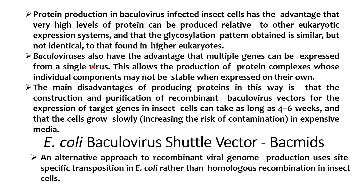Protein production in baculovirus-infected insect cells has advantages: very high levels of protein can be produced relative to other eukaryotic expression systems, and the glycosylation pattern obtained is similar, though not identical, to that found in higher eukaryotes. Additionally, multiple genes can be expressed from a single virus, allowing the production of protein complexes whose individual components may not be stable when expressed on their own.